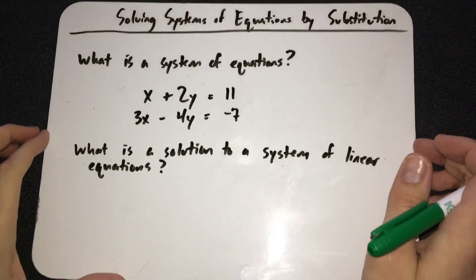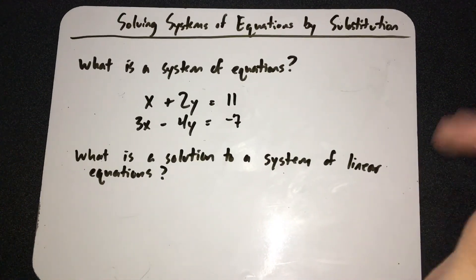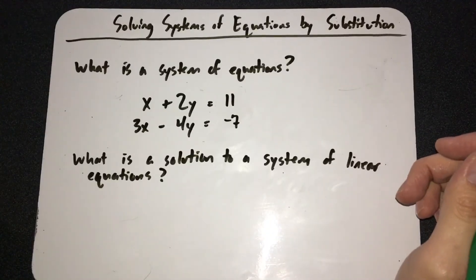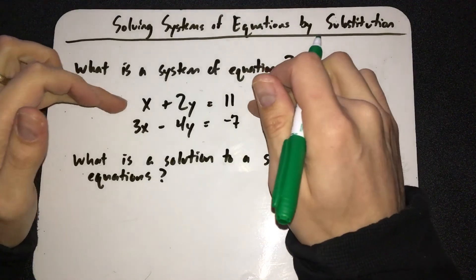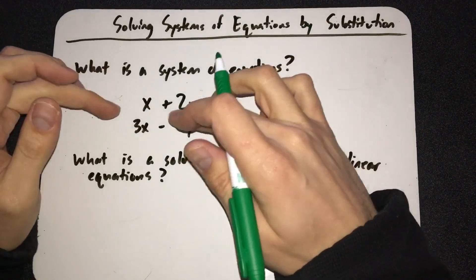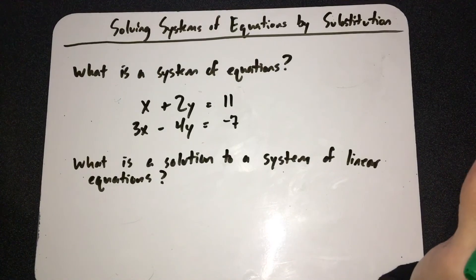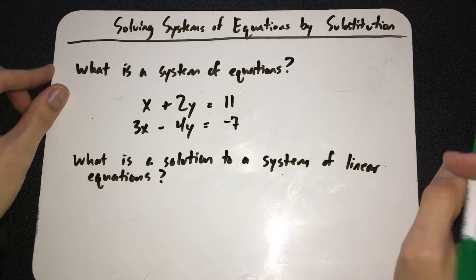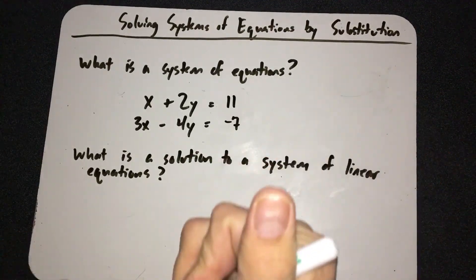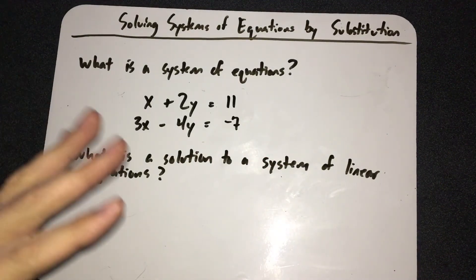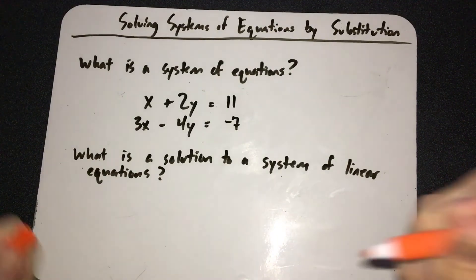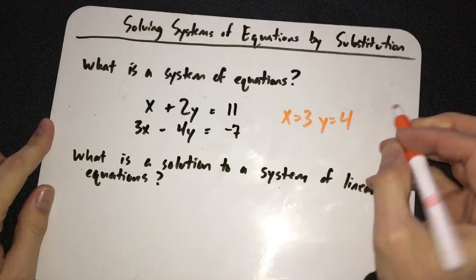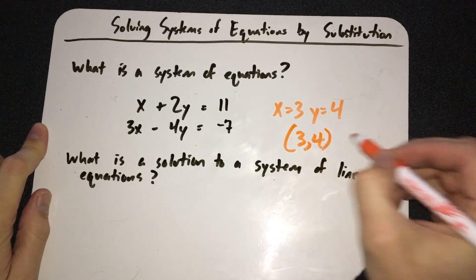What is a solution? The solution is the magic combination of x and y that will make both equations true. I can find a number for x and a number for y that, if I plug it into both equations, both will equal what they're supposed to equal. The answer to this one is x equals 3 and y equals 4, or written as the point (3, 4).